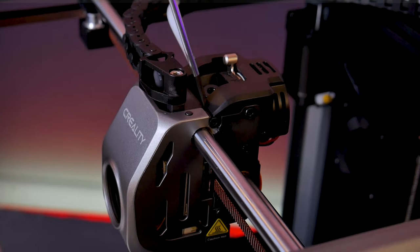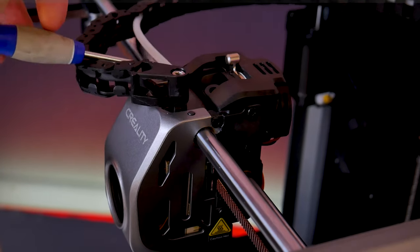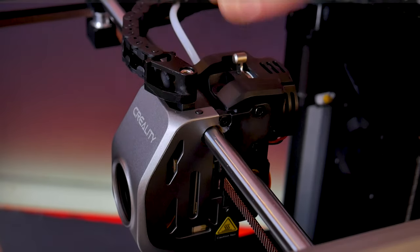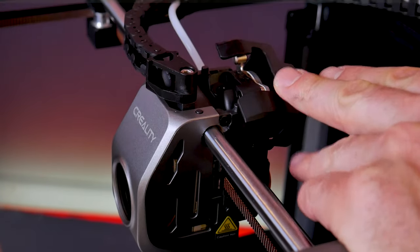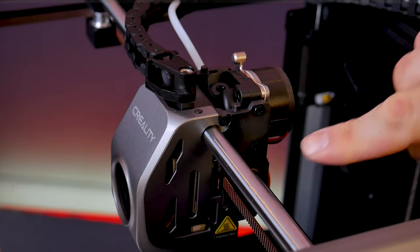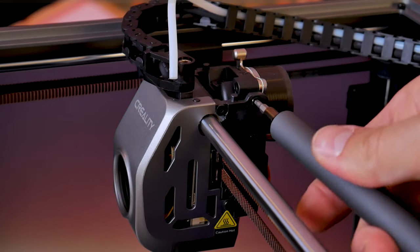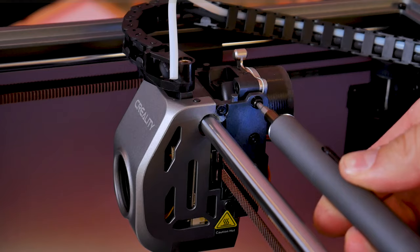At this point you can see I've already unloaded the filament. We're going to be removing the plastic cover over the extruder motor. You'll pry up with a flathead screwdriver under those two tabs and it'll pop off. Now you can see the two screws on the right hand side holding the extruder in place.